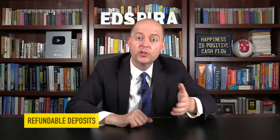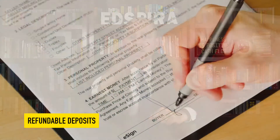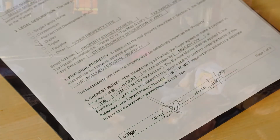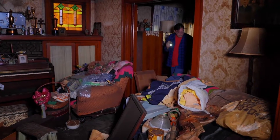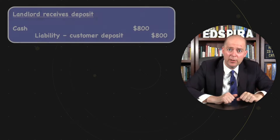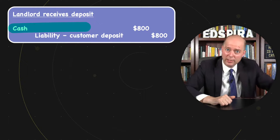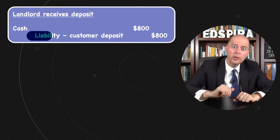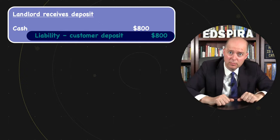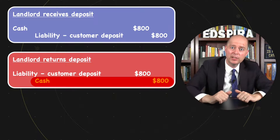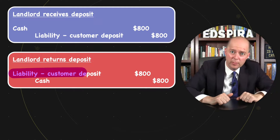Next, let's discuss deposits and advances from customers. We'll start with refundable deposits. If you've rented an apartment or a house, you've probably been asked to give the landlord a deposit in case you damaged the place or break the lease. If you gave the landlord an $800 damage deposit for a 3-month lease, the landlord would record the cash received and then record a liability for the refundable deposit. When your lease is up, the landlord would return the cash to you and remove the liability from its balance sheet.